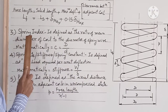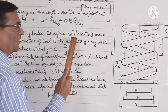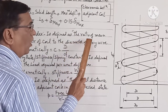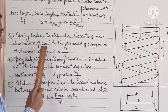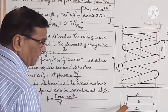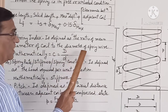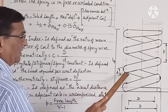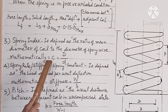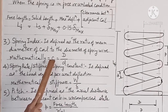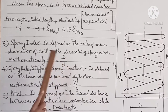Third is spring index. It is defined as the ratio of the mean diameter of the coil to the diameter of the spring wire. Mathematically, C is equal to capital D upon small d.